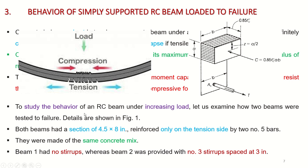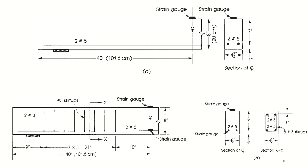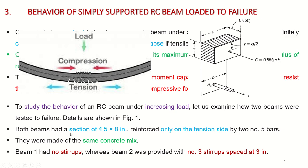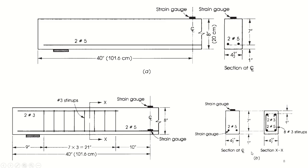To study the behavior of an RC beam under increasing load, two beams were tested to failure. Both beams have a section of 4.5 inches wide and 8 inches deep, reinforced only on the tension side by two No. 5 bars, made of the same concrete. Beam 1 has no stirrups; Beam 2 has No. 3 shear stirrups spaced at 3 inches.